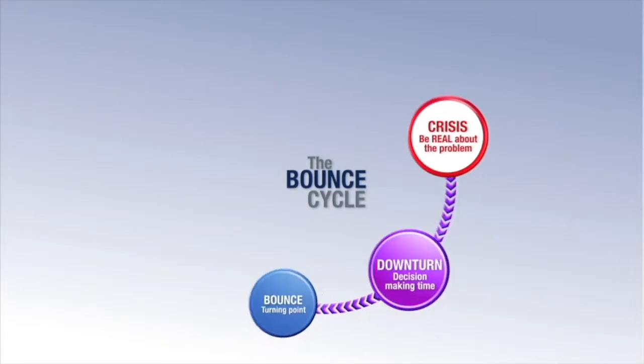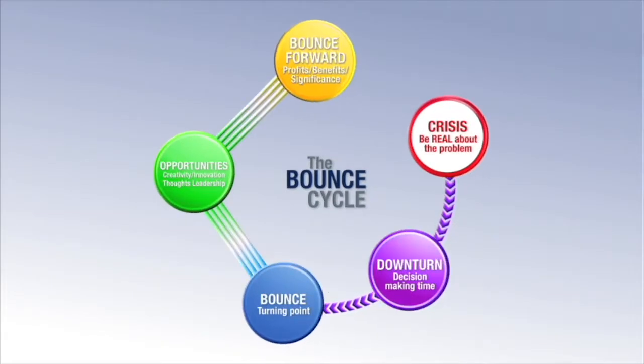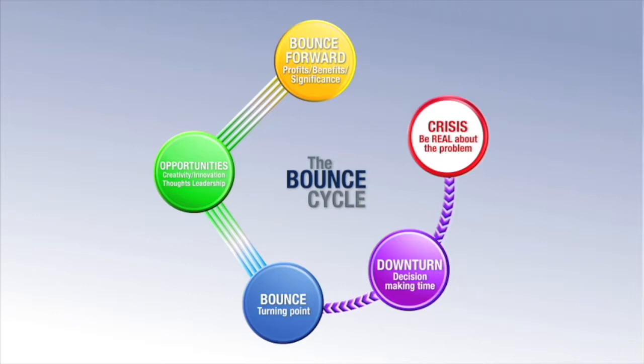Here is the bounce cycle model and as you can see it operates in a spiral clockwise rotation. The reason we have done this was to show that we need to bounce back in order to bounce forward. But let's unpack this further.